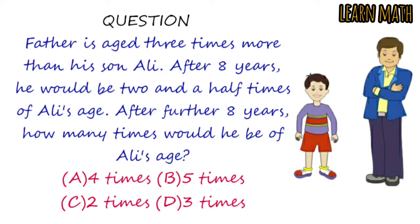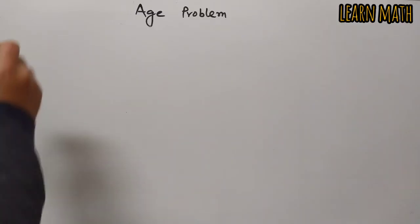Option A is four times. Option B is five times. Option C is two times. Option D is three times. Let's begin to solve the question.